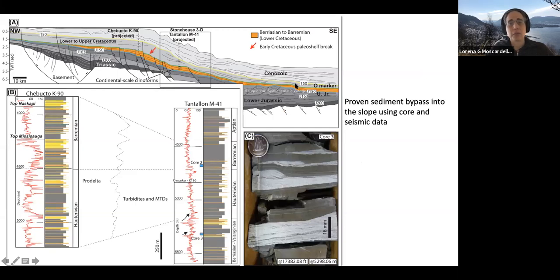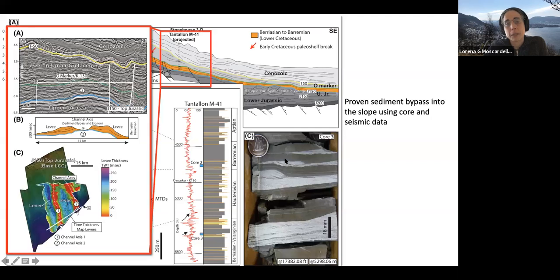And here you can see the architecture of the margin. Again, in orange here, the interval of interest with some continental scale clinoforms in there, the paleo shelf break in here. And this is a correlation between two wells. This well here, the Tantallon well, is quite important because it is the one that has core. It's located on the slope area. And what we start to see on the core, and this has been published also by Piper in an AAPG paper, is that we have gravity driven deposits in here. In this case, some turbidites and also some mass transport deposits. So this was an indication of sediments bypassing towards the slope.